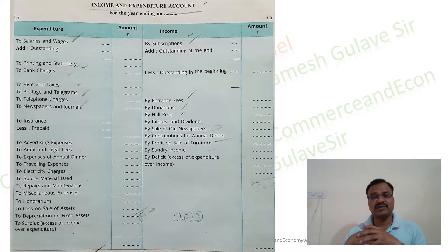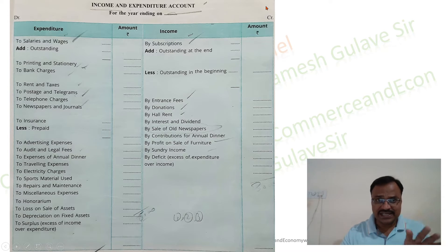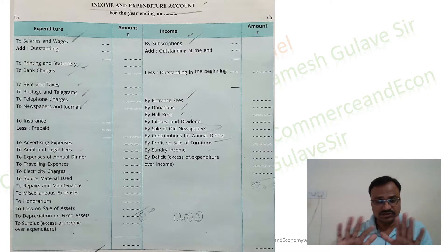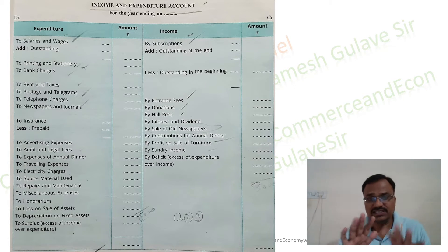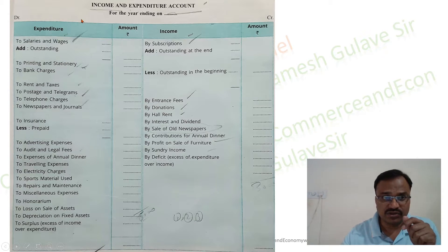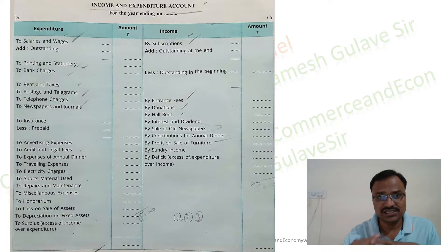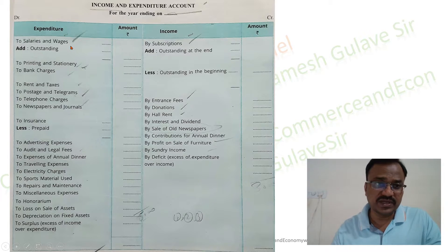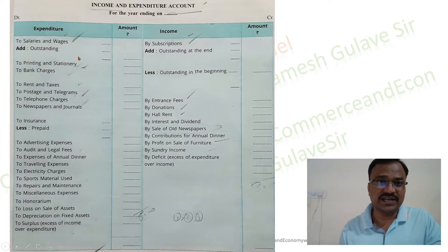Now we are going to discuss the income and expenditure account. On the screen you can see the specimen format. The income and expenditure account is essentially the same as the profit and loss account, but the name is different because the main objective of a not-for-profit concern is not to earn profit but to give services to society. So they prepare an income and expenditure account instead of a profit and loss account — only the name differs. On the debit side we record all expenses and losses, and on the credit side we record incomes and gains. On the debit side, salaries and wages are recorded, and if there are outstanding salaries or wages they are added — following the normal rules of adjustment of final accounts.